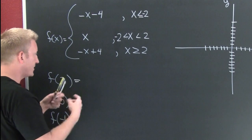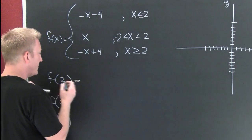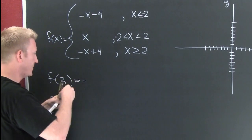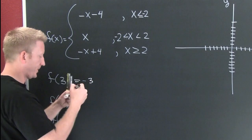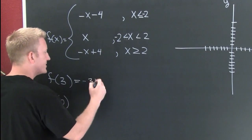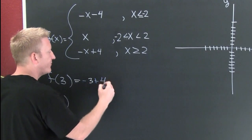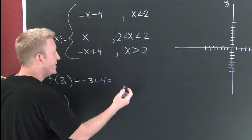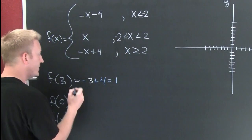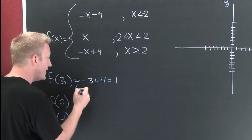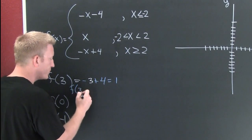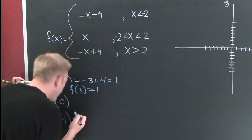So what's my x going to be? It's going to be 3. So it's 3 minus 3 plus 4... that's 1. Finish him! So then I can say f of 3 is 1.